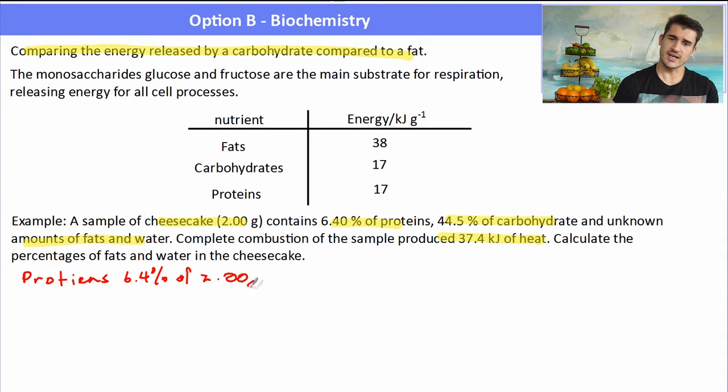So we've got to work out how many grams of proteins we had. So 6.4% of two grams is 0.828 grams of protein in this cheesecake. We need to work out the amount of carbs, and most of this cheesecake was carbs. So 44.5% of two grams, and that will tell us how many grams of carbohydrates were present. So we have 0.89 grams of carbohydrates.